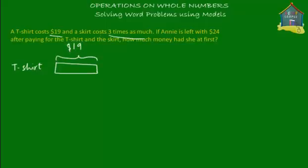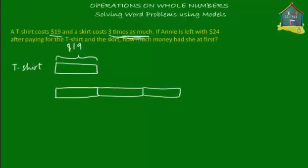If a t-shirt costs $19, how much will the skirt cost? Since the skirt is three times as costly as the t-shirt, the model for the skirt will be three blocks: one, two, and three blocks of the same size as the t-shirt. This represents the cost of the t-shirt, and this will be the cost of the skirt.